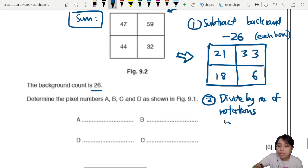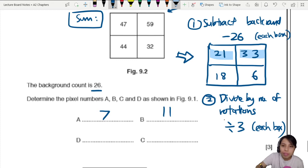Okay, almost there. So divide by number of rotations. Divide by three. This is for each box. Every single box divided by three. 21 divided by three, you get seven. 33 divided by three, you get 11. 18 divided by three, six. Last one, six divided by three, two. Seven, six, 11, two.